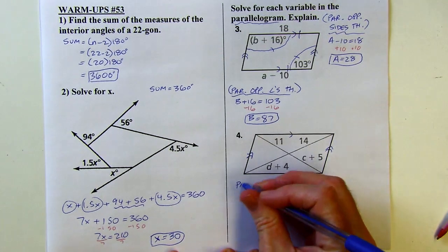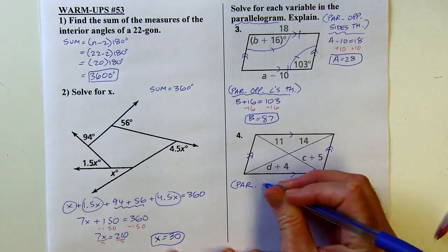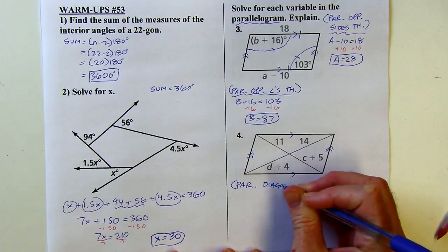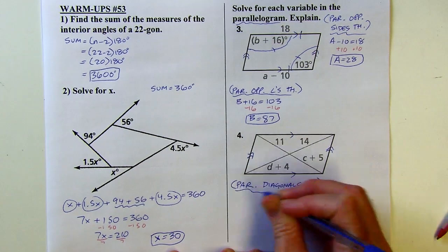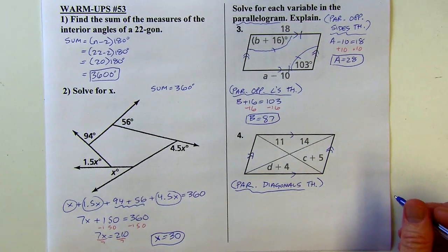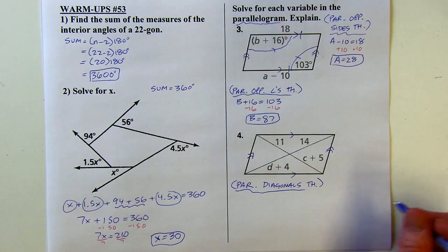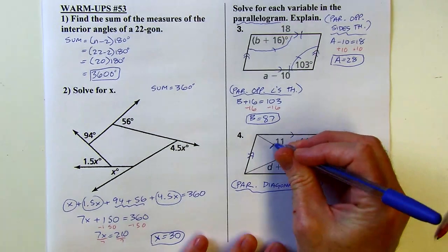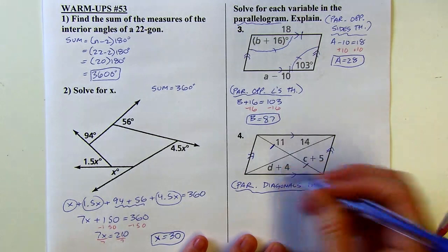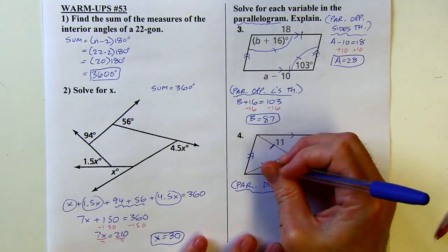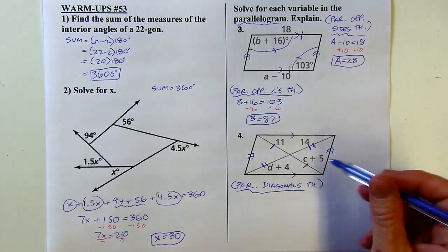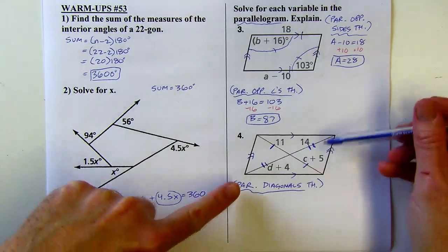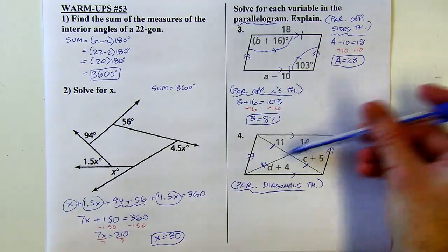So I'm going to use the parallelogram diagonals theorem. Here's my explanation here. What that says is that the diagonals of parallelograms always bisect each other. So that means these two are congruent to each other because this cuts that in half. And these two are congruent to each other. Notice, it's not that all four pieces are congruent because they're not, right? This diagonal is longer than the other one.